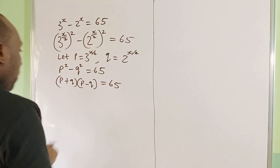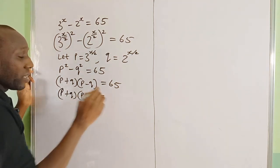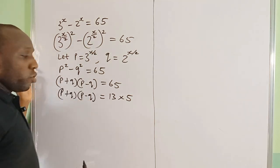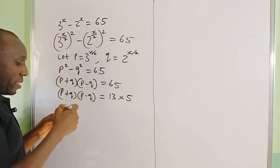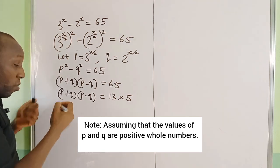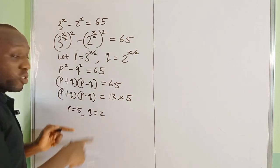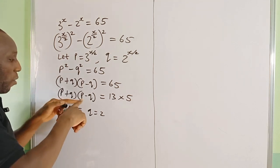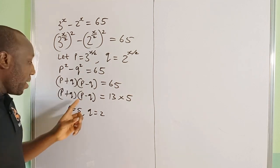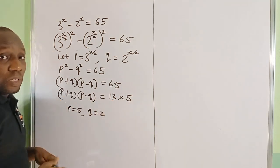So we have (p + q)(p − q) = 13 × 5. Now, which bracket should be assigned to 13? Well, p + q is obviously bigger than p − q — for example, if p = 5 and q = 2, then p + q = 7 and p − q = 3. So p + q will always be bigger, and we assign 13 to p + q and 5 to p − q.